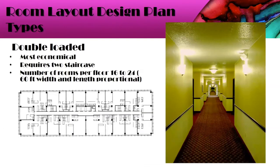The first room layout option is the double loaded corridor, which is the most common and most economical style in terms of space. This style of corridor requires two staircases for access. The number of rooms that can fit is 16 to 24 depending on the width of the corridor — roughly 60 feet — and the length determines how many additional rooms can be accommodated.